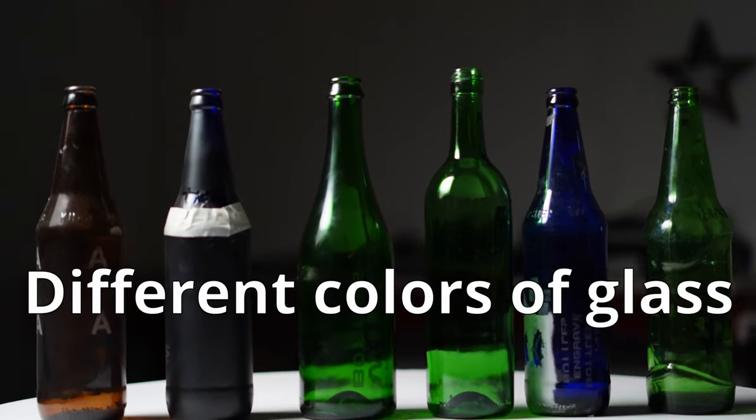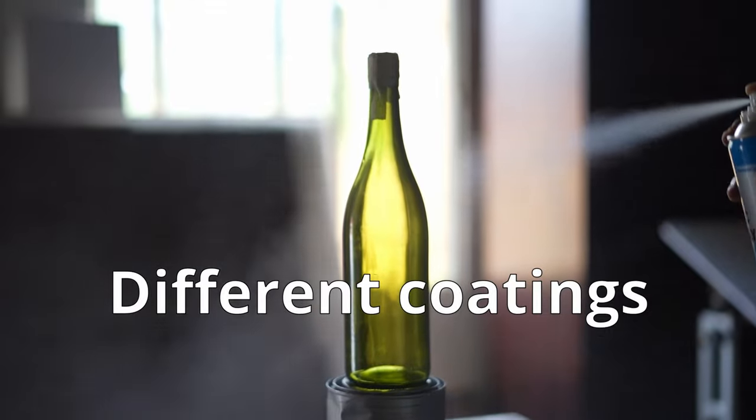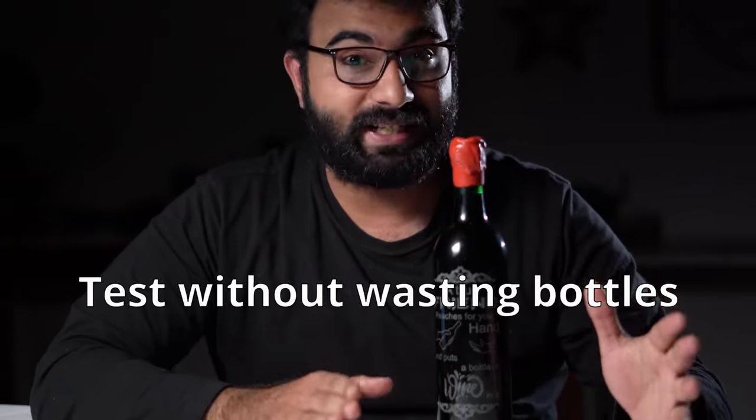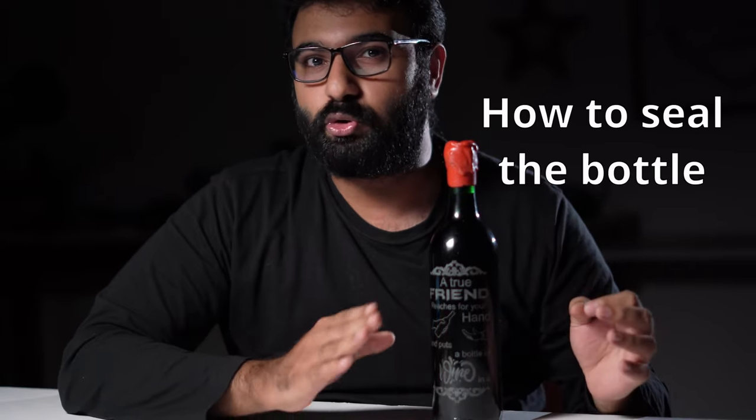I'll engrave on different colors of glass and show you what you get when you use different coatings. I have included the settings that I used and I'll tell you a cool trick to test out your designs without wasting bottles. I'll also show you how to set up your rotary module for engraving. In the end, I'll show you how to seal the bottle once you have it engraved and filled. So stick with me till the end to learn how to engrave glass bottles on a diode laser.